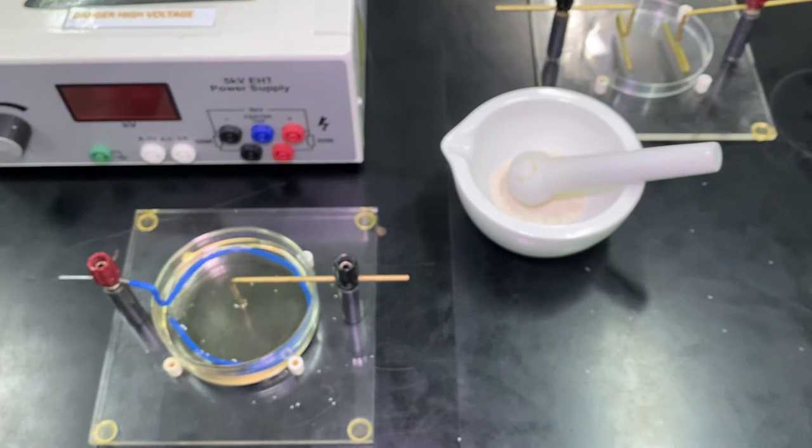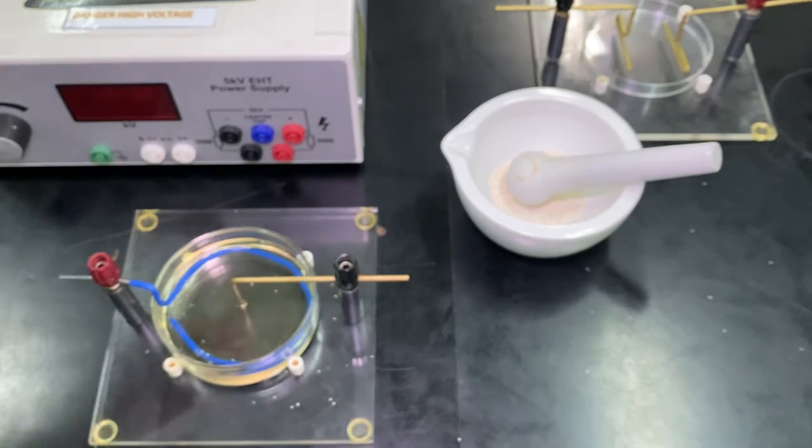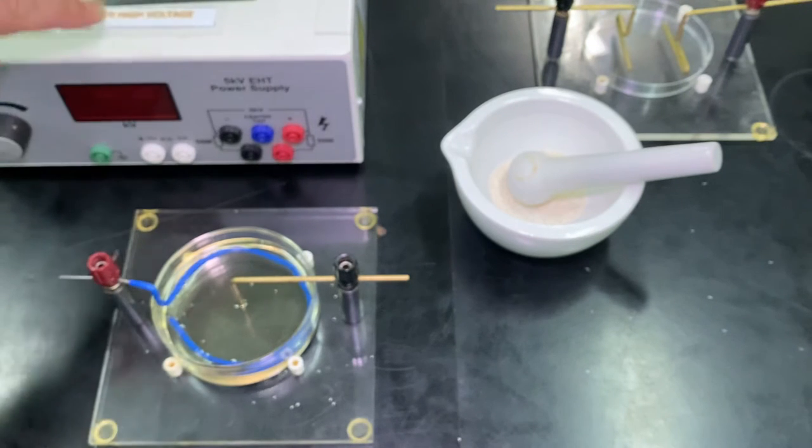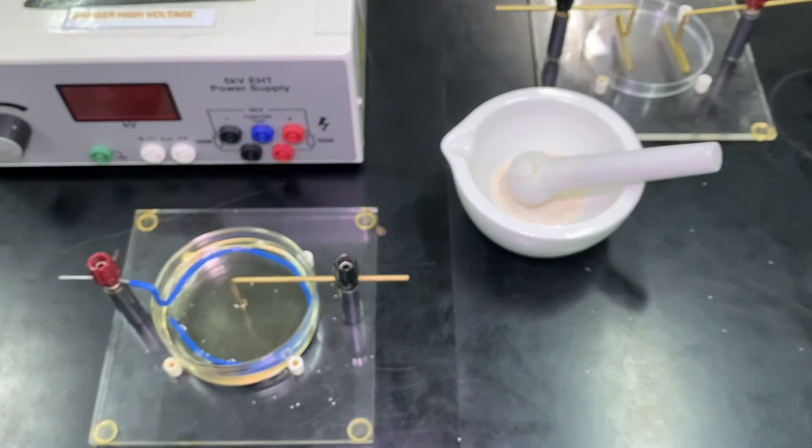Now, before I sprinkle in the semolina, I'm going to set up the electric field. We're going to use this, which is EHT—that stands for Extra High Tension. That's an old-fashioned name for very high voltage. Now, this one can go up to five kilovolts or 5,000 volts.